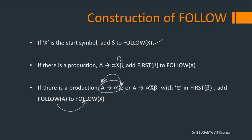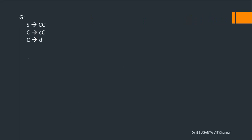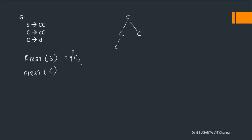That is the procedure to construct FIRST and FOLLOW. Let's see some examples. Given a grammar with two non-terminals, we compute FIRST of S and FIRST of C. What is FIRST of S? S gets expanded to CC. For C there are two alternates — the first alternate gives terminal 'c', and the second production gives terminal 'd'. So FIRST of S equals FIRST of C, which is {c, d}.